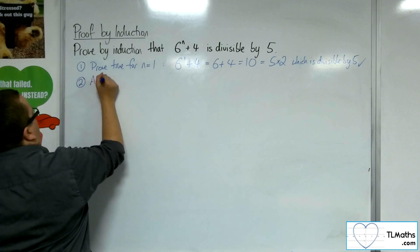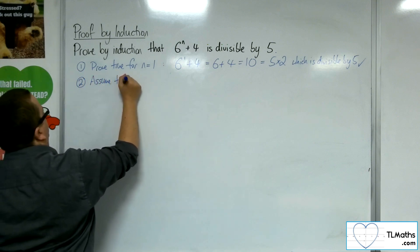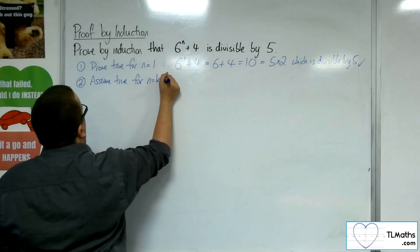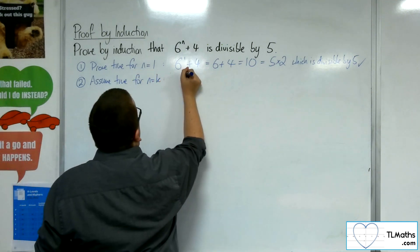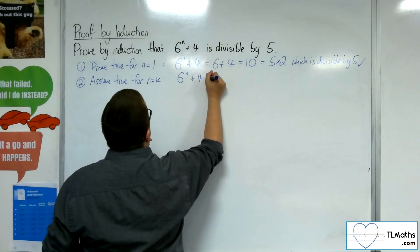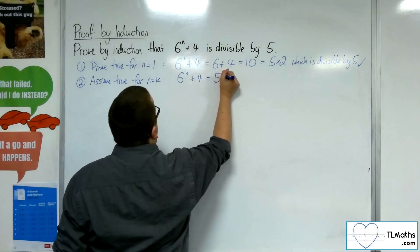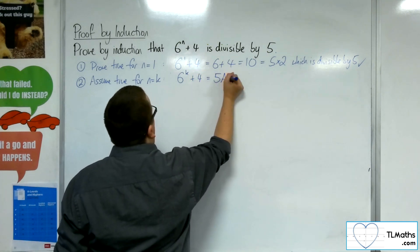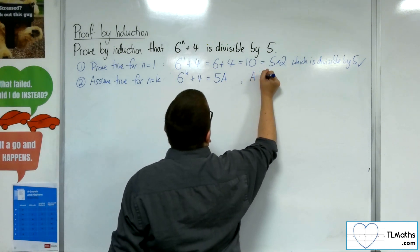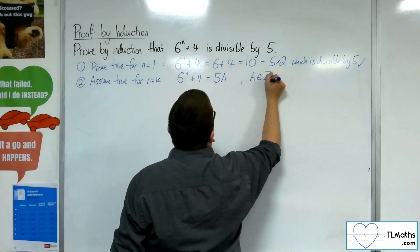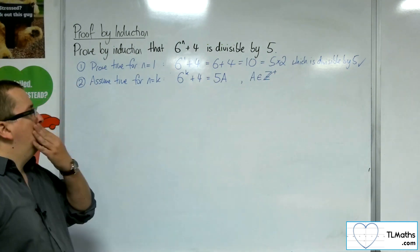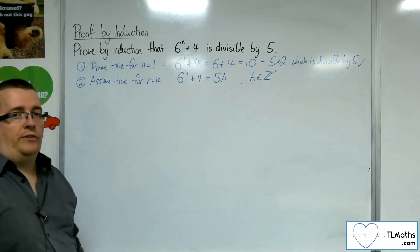Now we're going to assume true for n equals k. So 6 to the k plus 4 would have to be equal to 5 lots of some number a, where a is a positive integer. That is the assumption stage.